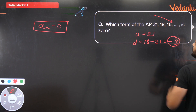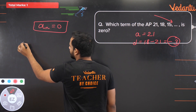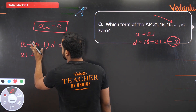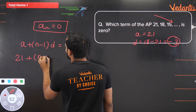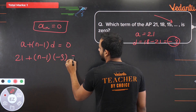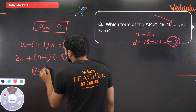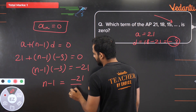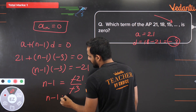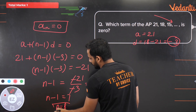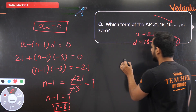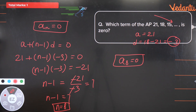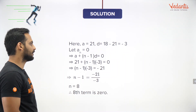Using the formula aₙ = a + (n−1)d = 0: 21 + (n−1)(−3) = 0, so (n−1)(−3) = −21, n−1 = 7, therefore n = 8. The 8th term of this AP will be 0.